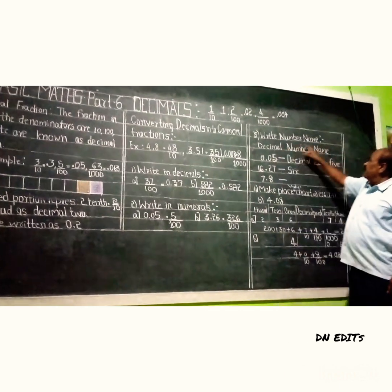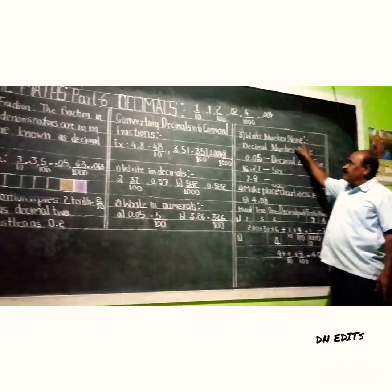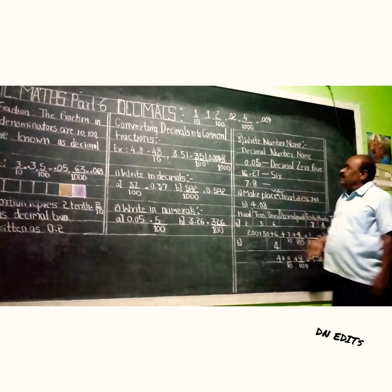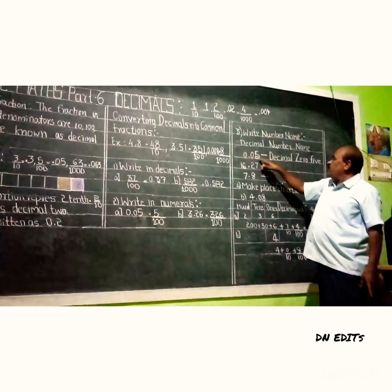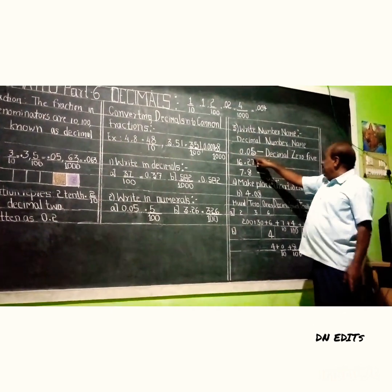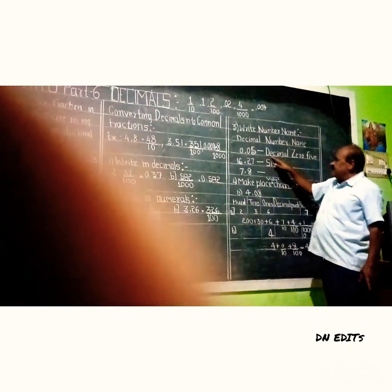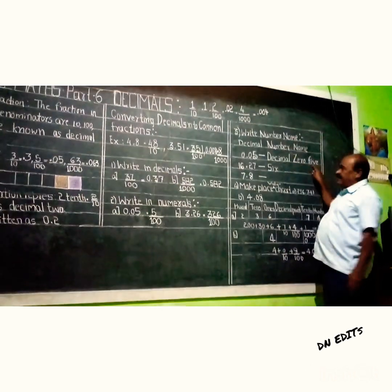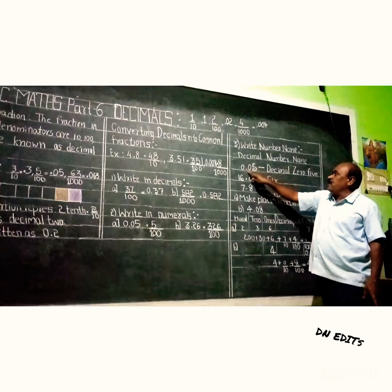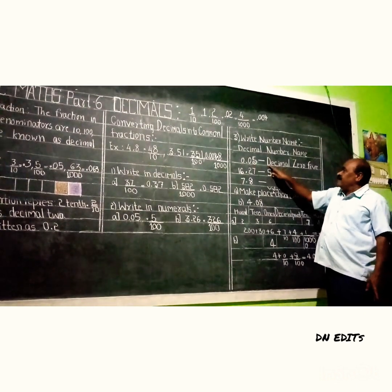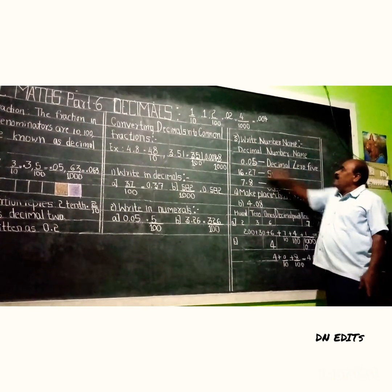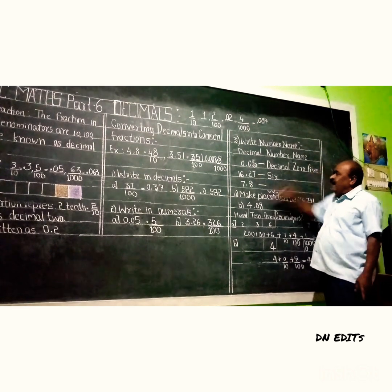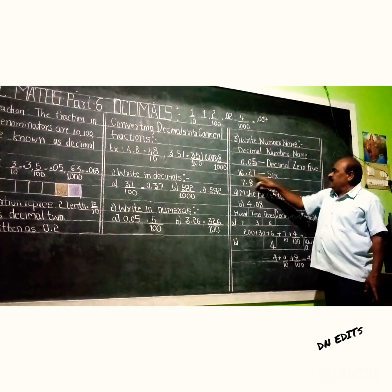Next, write the number name — the decimal number name. 0.05: how can you read it? Decimal zero five. So 0.05 you can read as 'decimal zero five.' Next, 16.27 — sixteen decimal...